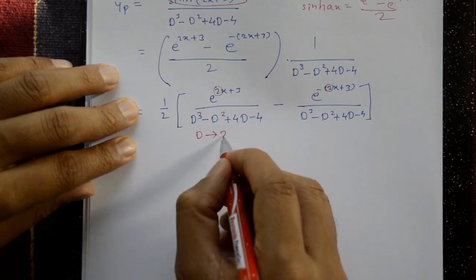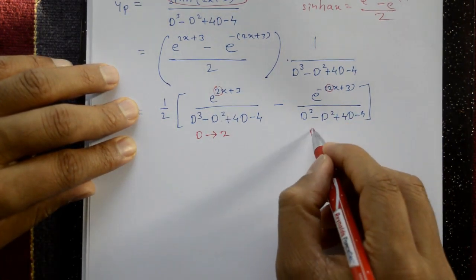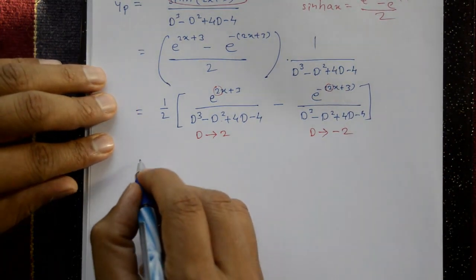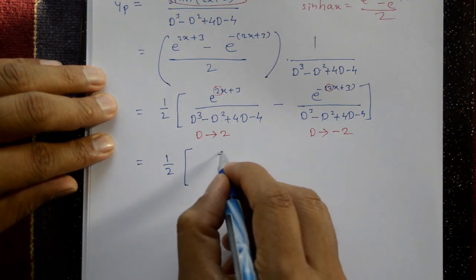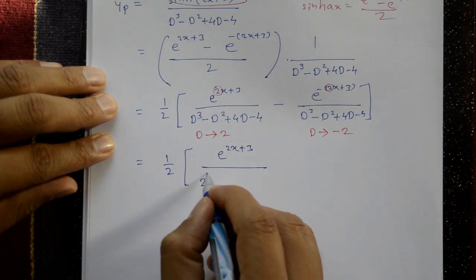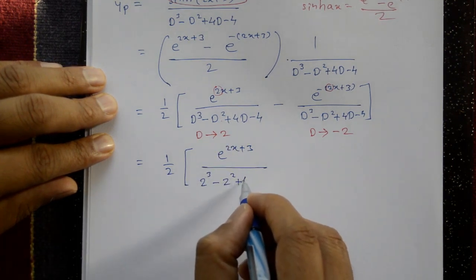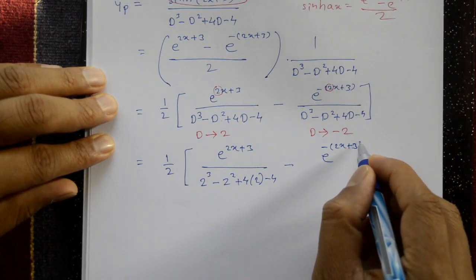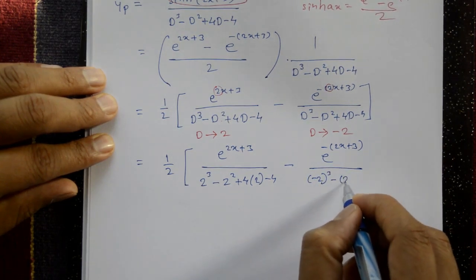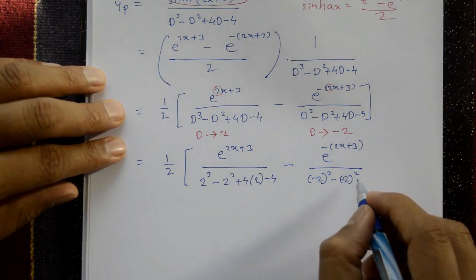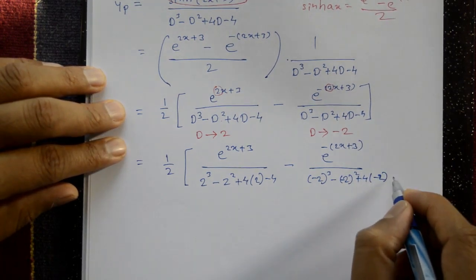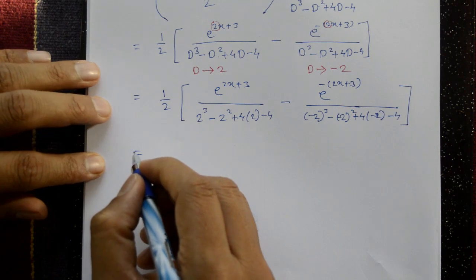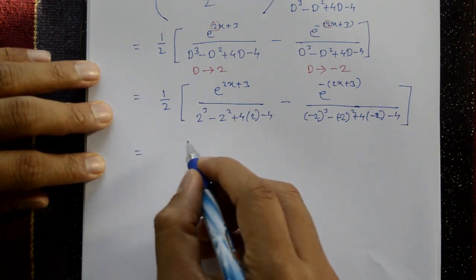Applying Type 1: for the first term D = 2, for the second term D = -2. So: (1/2) · [e^(2x+3)/(8-4+8-4) minus e^(-(2x+3))/((-8)-4+(-8)-4)].